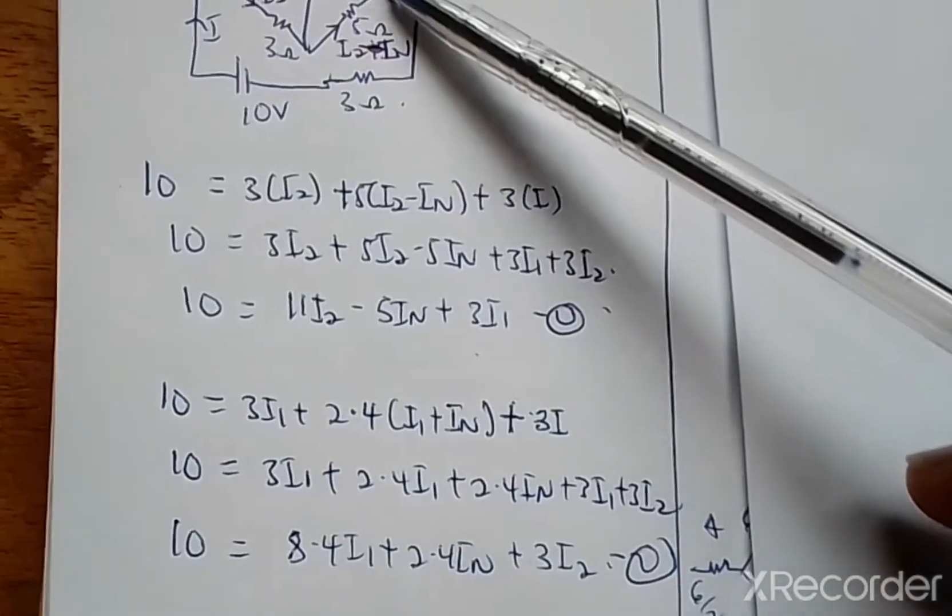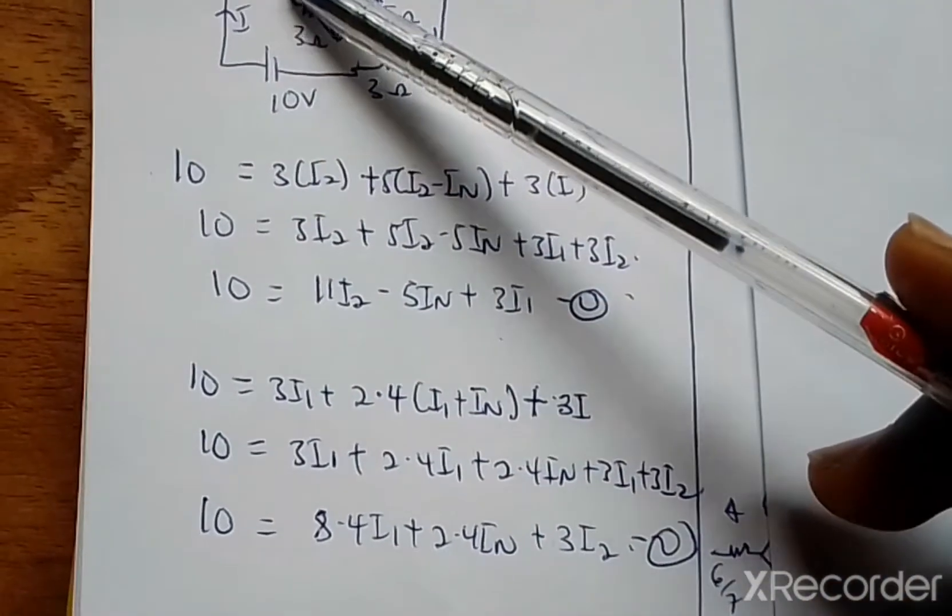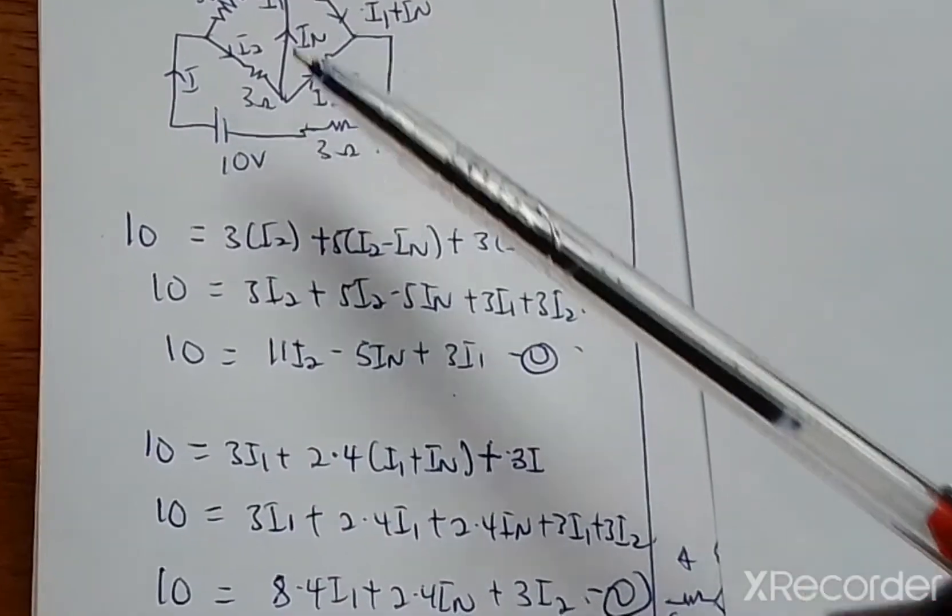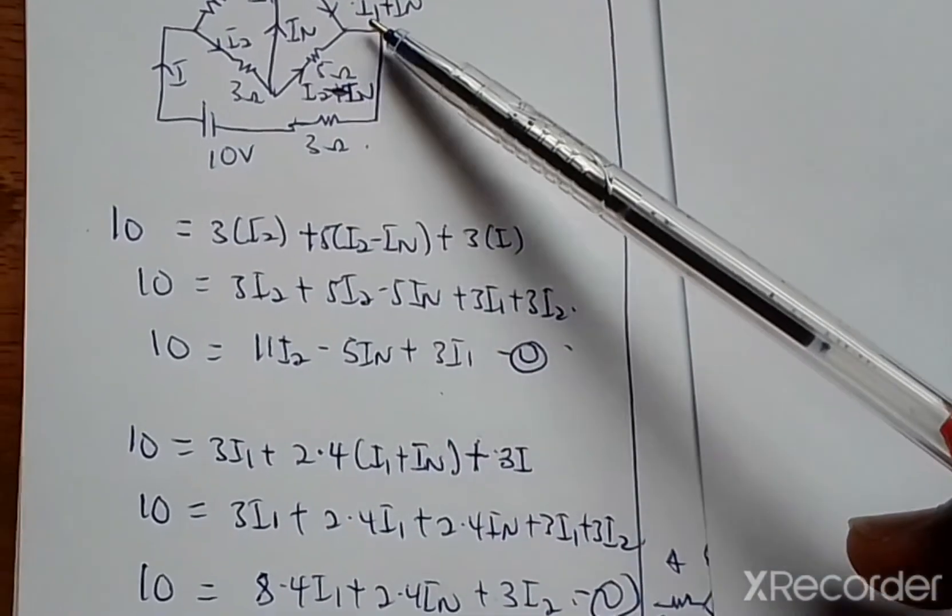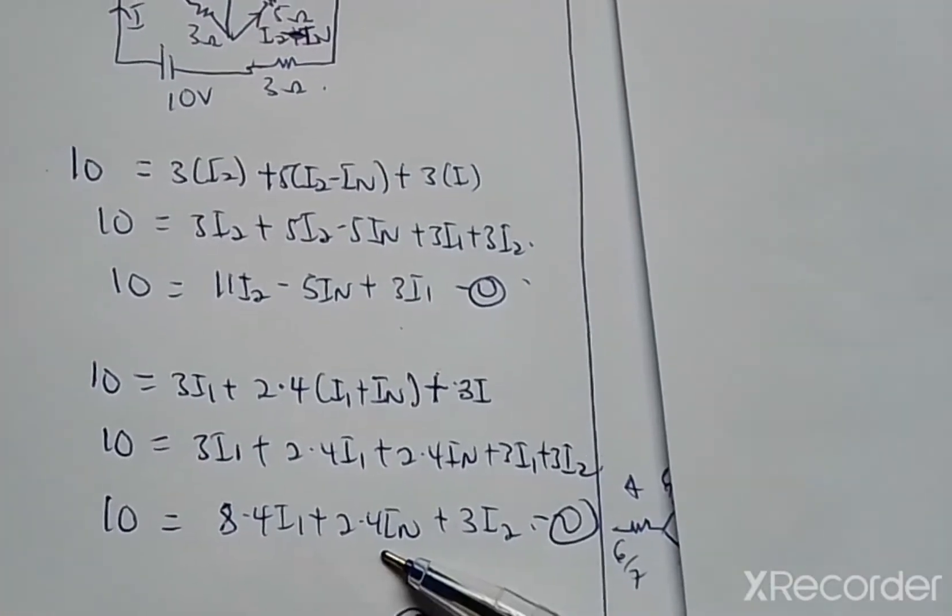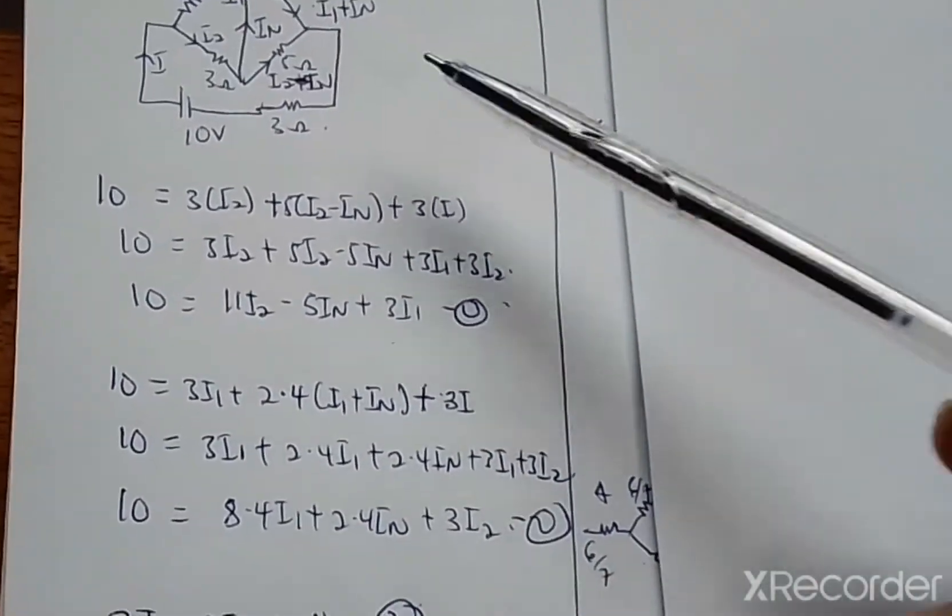Taking our second loop, we are going to get this loop, so that one we are going to get 10 equals 3I1 plus 2.4 times the current, plus 3I. When you simplify this, that's your second equation.